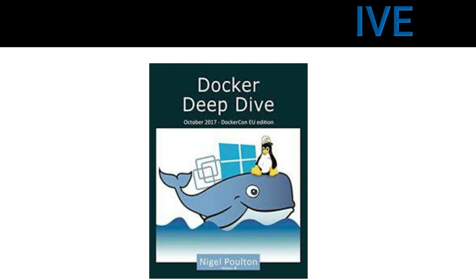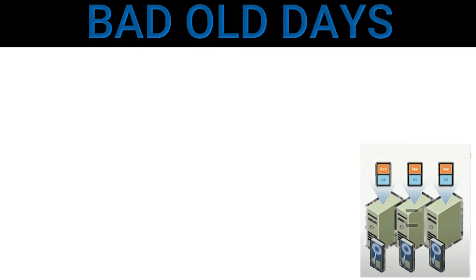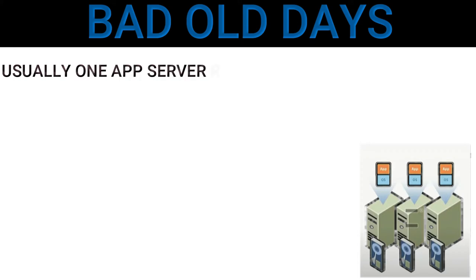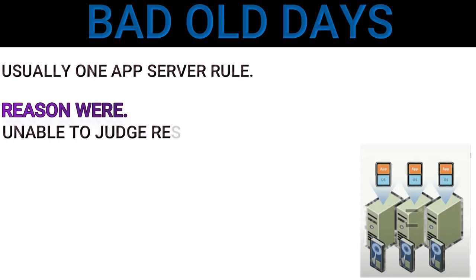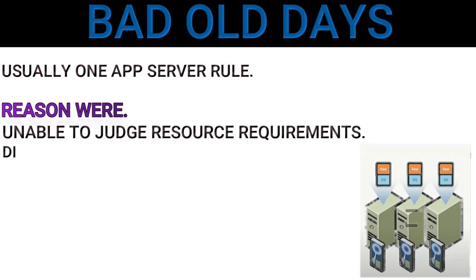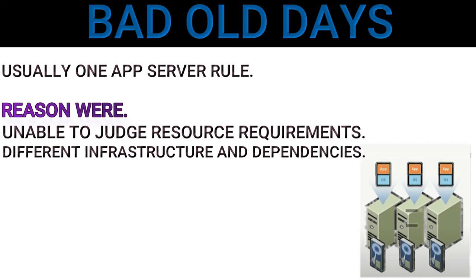Let's talk about what was before containerized applications. In the ancient times there was a concept that only one app would be deployed on one server. There were two reasons for that: number one was the inability to judge resource requirements, and number two was different infrastructure and dependencies — like some apps required Windows and some required Linux. That's why we had to use a different server for each application.